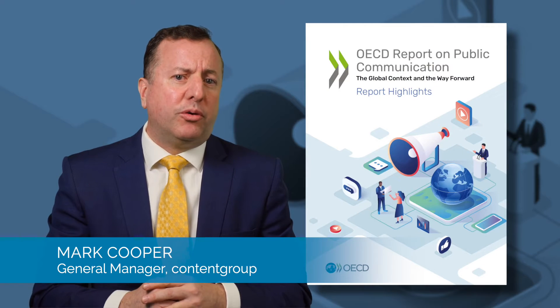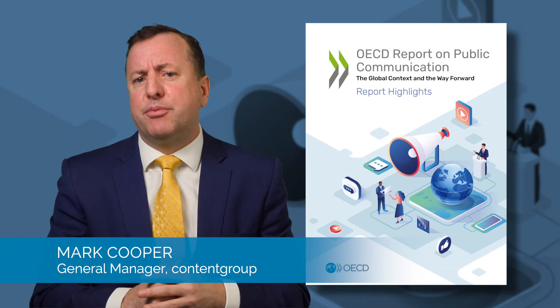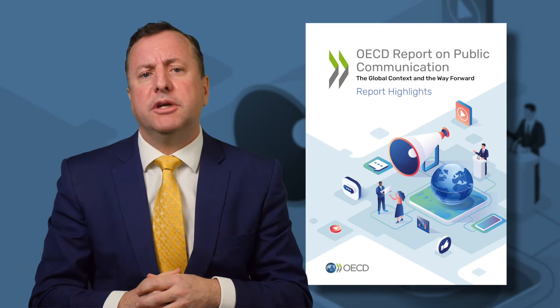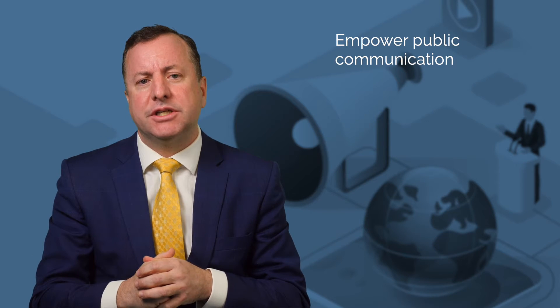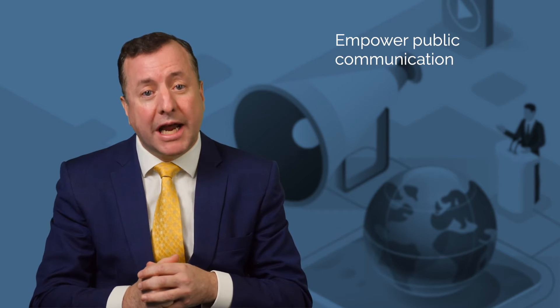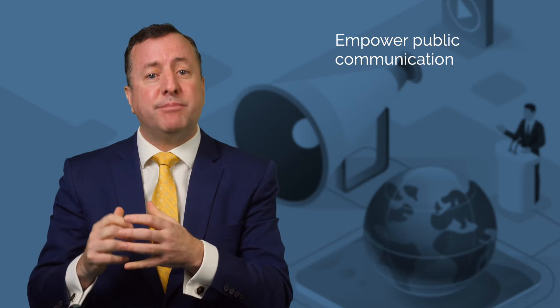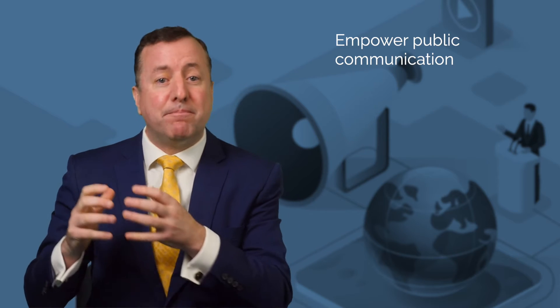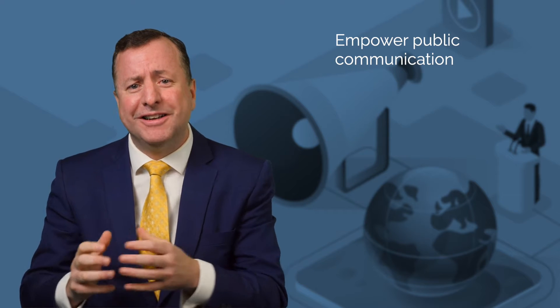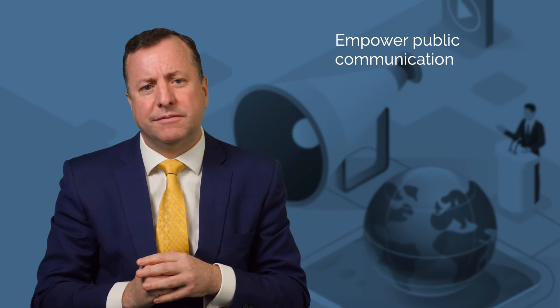The OECD report identifies five key principles of effective public communication. Empower the public communication function and use it to enable citizens' participation in policy design, and separate the public communication function as much as possible from political communication.